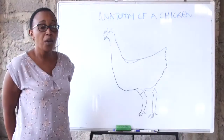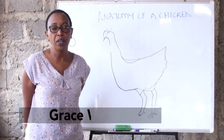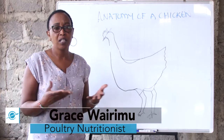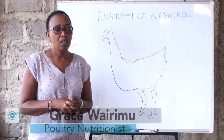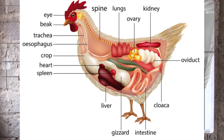The next topic we are going to cover is the anatomy of the chicken — the tissues and organs of the bird. On the outer side of the bird we have the beak, which everybody knows. We have the nostrils, we have the trachea system, and we have the esophagus.